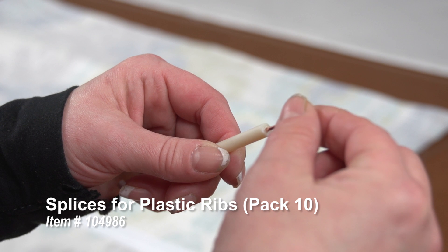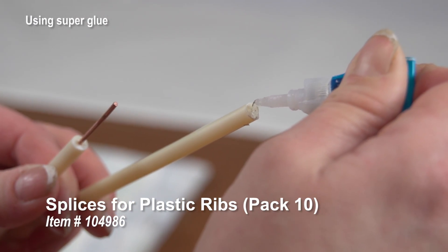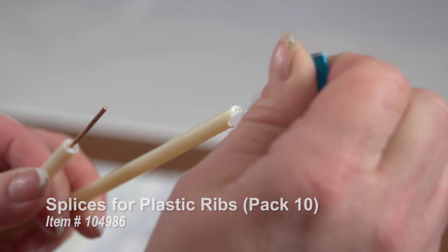To create a longer length, spline two ribs together using splines for plastic ribs. Those also are sold separately.